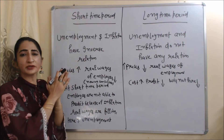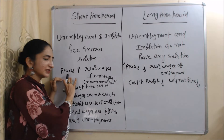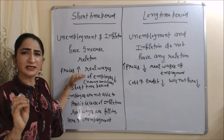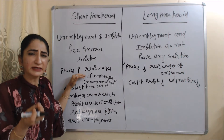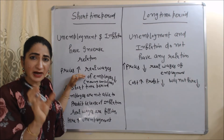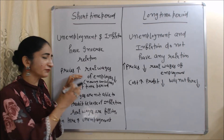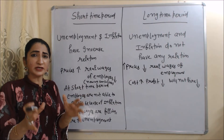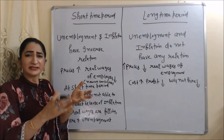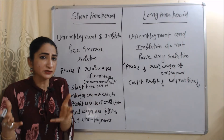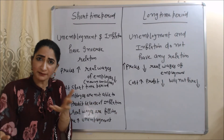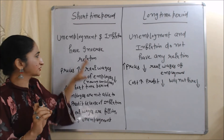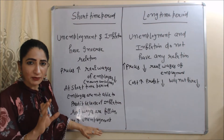In the short run, when inflation increases, prices of goods and services increase, and the real wages of employees fall. Real wages tell us the purchasing power of employees — how many goods and services we can buy with a particular amount of money. If prices increase, we can buy only fewer goods and services. In the short run, employees are not able to realize that their real wages are reducing, so they don't demand higher wage rates. As a result, the producer's cost does not increase, profit does not reduce, and they hire more employees, so unemployment falls.